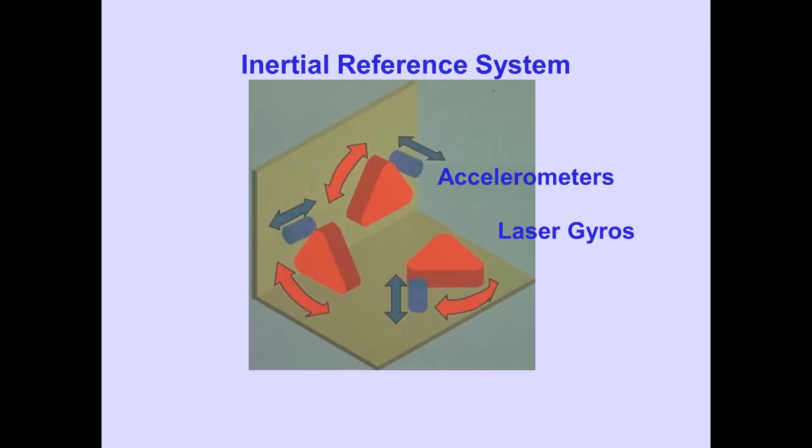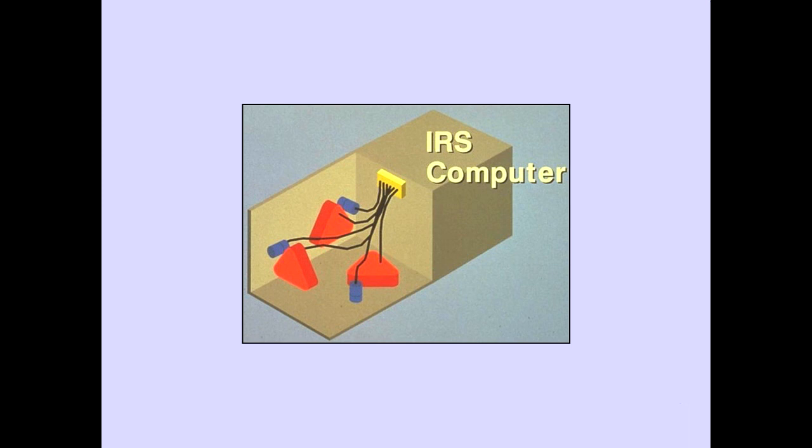The Inertial Reference System uses accelerometers and laser gyros to measure airplane movement in all three axes. The movement is then sent to an IRS computer for processing.